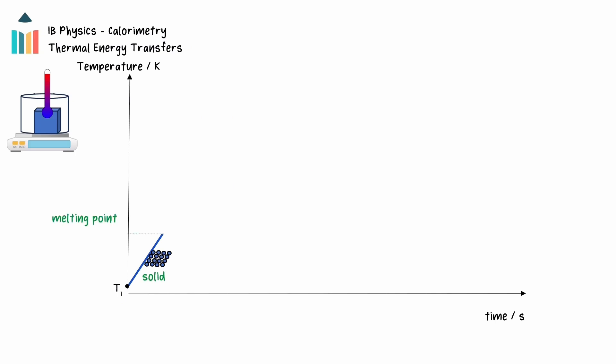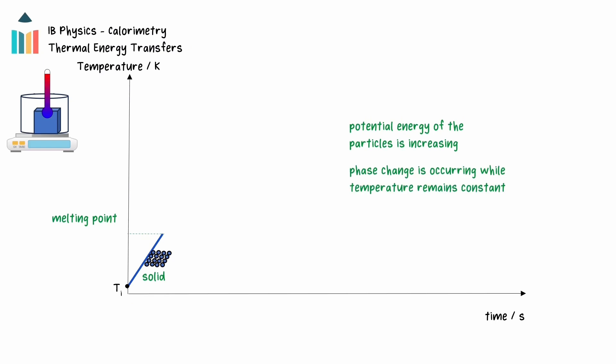When the ice has reached this temperature, its particles have enough energy to undergo a phase change from solid to liquid. During a phase change, the energy being transferred into the substance is increasing the intermolecular potential energy of the particles and not the kinetic energy. Phase changes occur at a constant temperature characteristic to the substance. Here, ice changes from a solid to a liquid at a temperature of 0 degrees Celsius, or 273.15 Kelvin. The graph will show a horizontal line while the phase change is occurring, until the entire mass of the substance has changed phase.